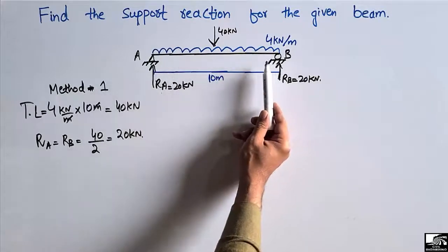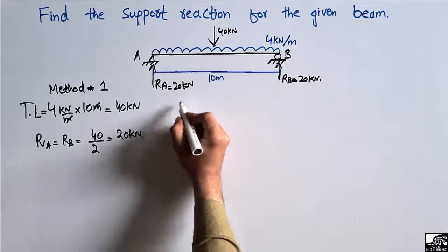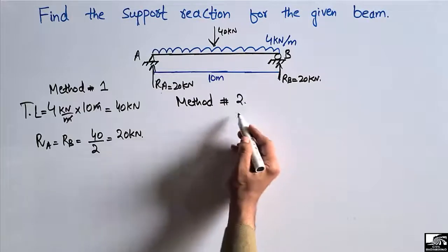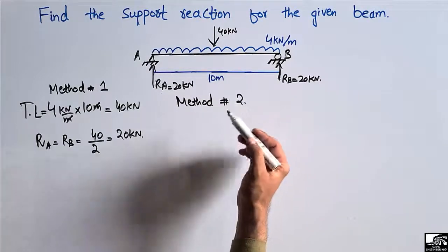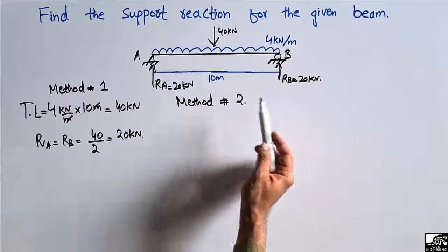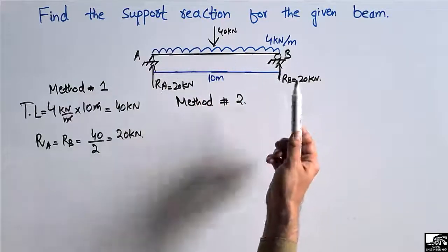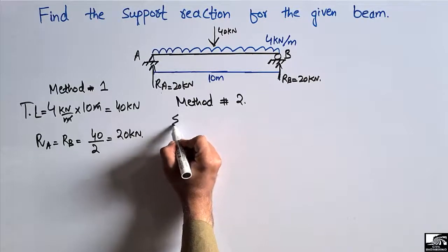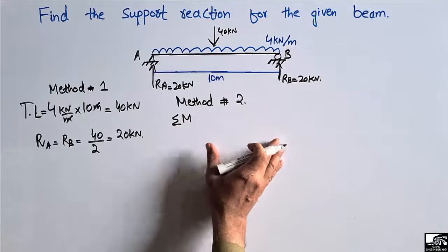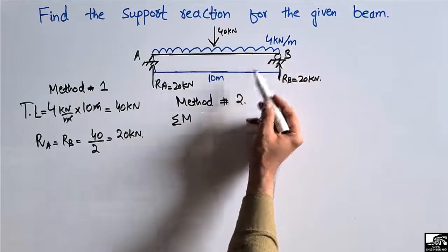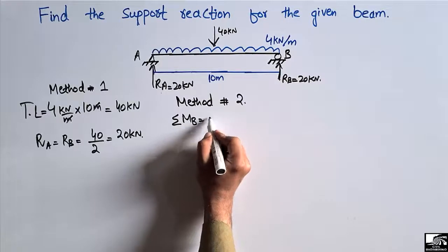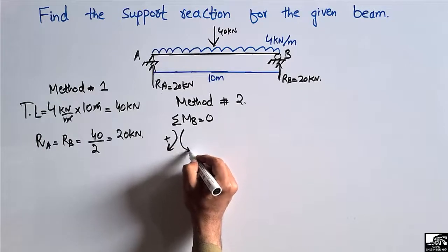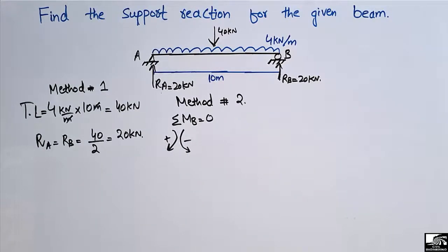The second method is more complex than the first, but it is more widely used because it can find support reactions for different types of beams — not only simply supported beams but any other kind of beam. In this method, we take the summation of moments at any point equal to zero. We will take the summation of moments at point B equal to zero. Our assumption is that clockwise moment is positive and anti-clockwise moment is negative.